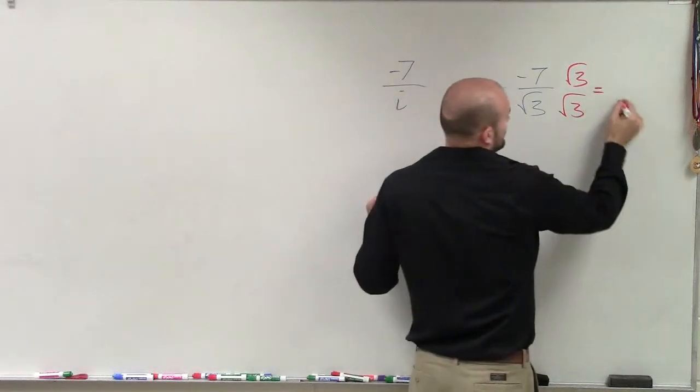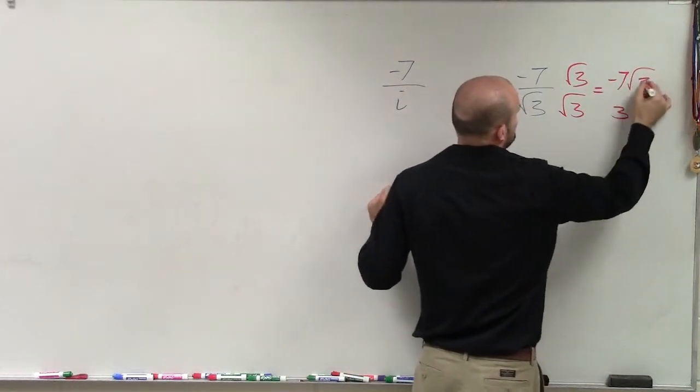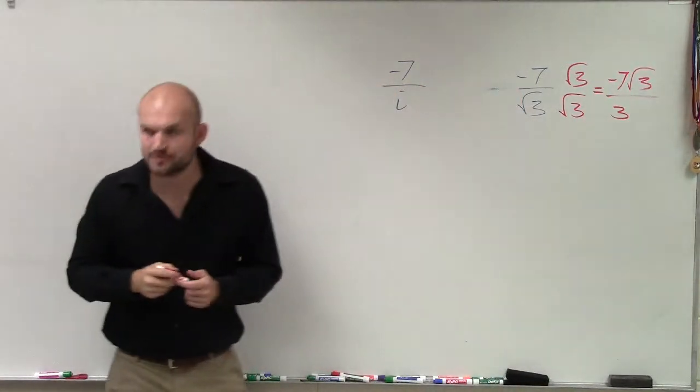Is 4 thirds the same as 8 thirds? And you get negative 7 times the square root of 3 over 3. That was for irrational numbers.